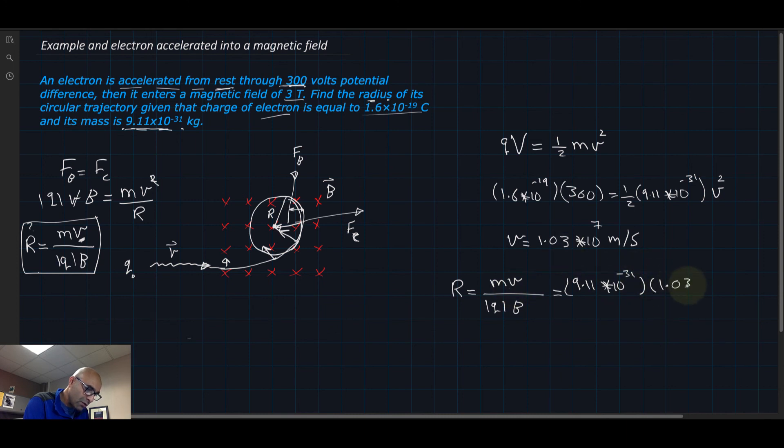That's divided by Q, which is 1.6 times 10^-19. Notice we did not put the minus sign for the charge of the electron because we care about its value.